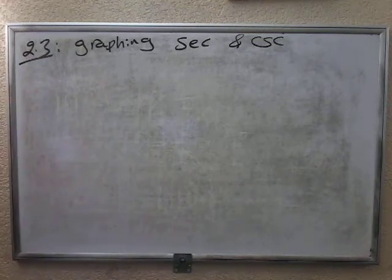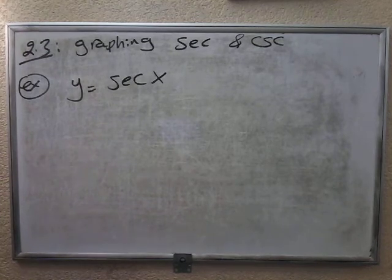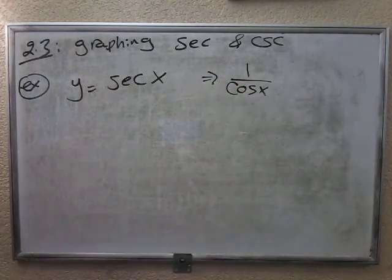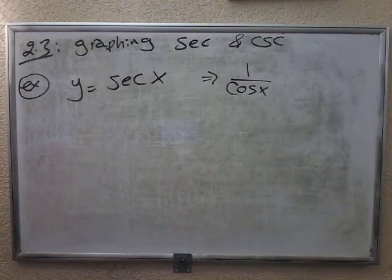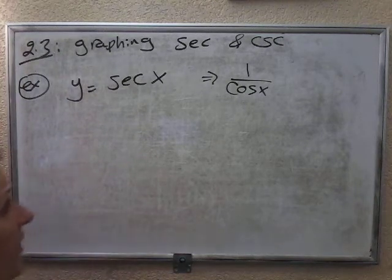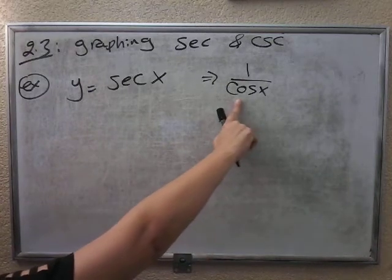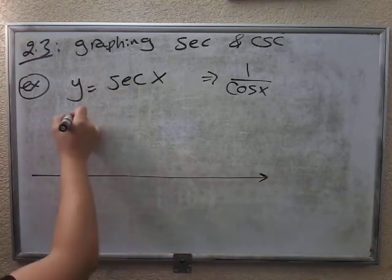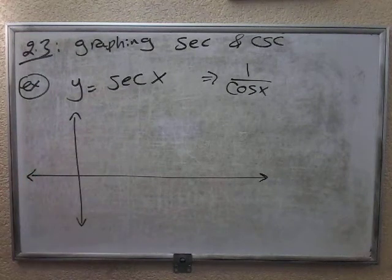Let's do an example. How would we graph y equals secant of x? Remember, secant is just 1 over cosine of x. It's very similar to graphing 1 over x — all real except x not equal to 0, or whatever makes the denominator equal to 0. Every time cosine of x equals 0, you will have undefined. So let's review how to graph cosine, and then 1 over cosine — that's the graph of secant.